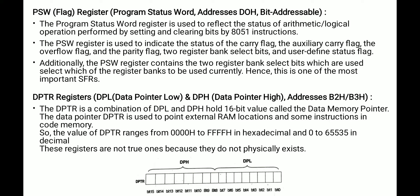The PSW register has 8 bits: CY (carry bit), then carry flag, auxiliary carry flag, a flag bit, RS1 and RS0 for bank selection, OV (overflow flag), one bit reserved for future use, and finally the parity flag. It indicates the status of all flags and the two register bank select bits, which are user-defined status flags.